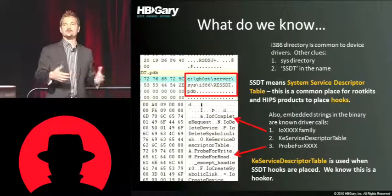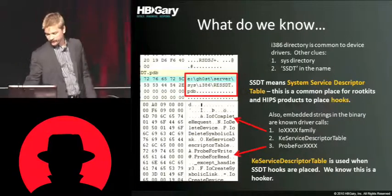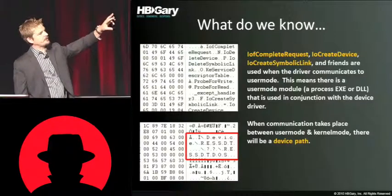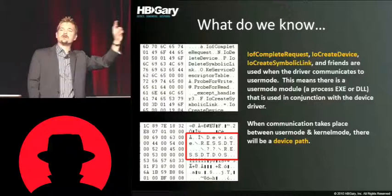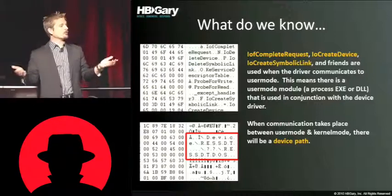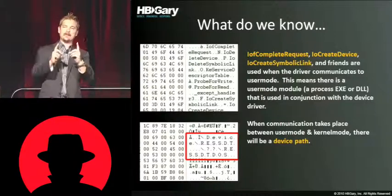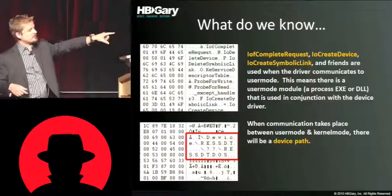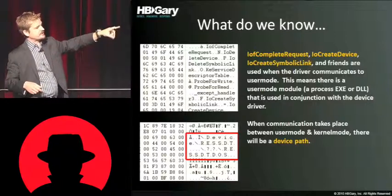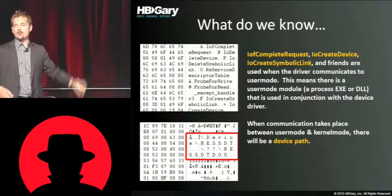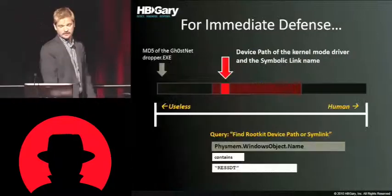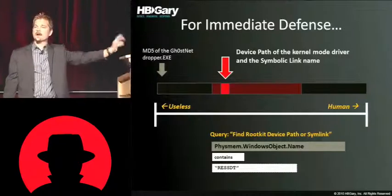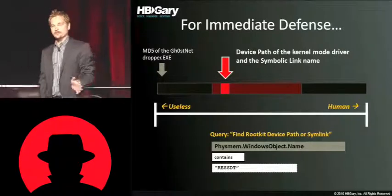I didn't have to look at any disassembly to figure out these capabilities. I also see IO create device and IO create symbolic link, which means there is both a user mode and a kernel mode component. Drivers have to put a named device path accessible over the file system, and you can see that in Unicode at the bottom of the file — 'res_ssdt' in two different forms. So that would be a great scan to run across the enterprise: find any window object named res_ssdt, and you might find all the other variants of this particular rootkit currently in your enterprise.